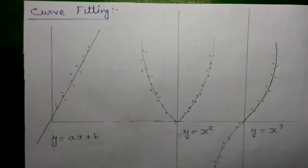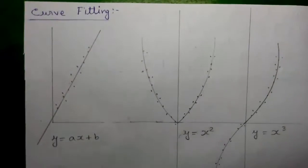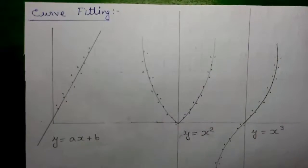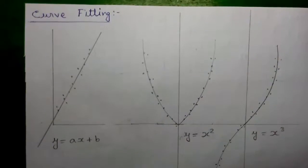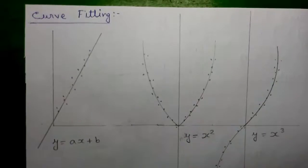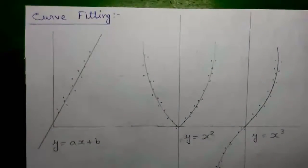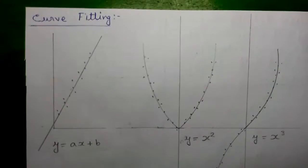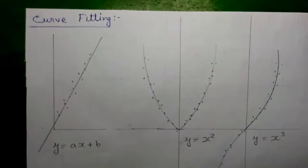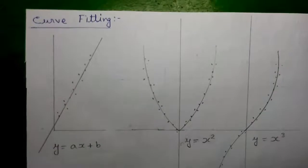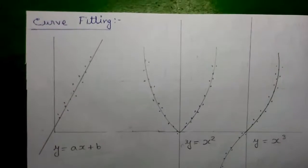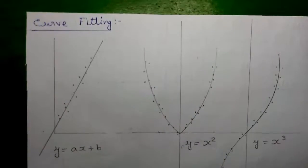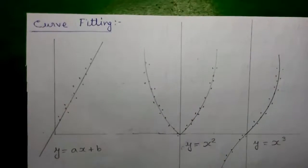So the summary of the graphical method for curve fitting is: number 1, draw all the points from the given data set onto a graph; number 2, connect the maximum number of points by a curve or straight line according to the question; number 3, find out the value of the unknown from that straight line or curve. These three steps basically summarize the graphical method for curve fitting.